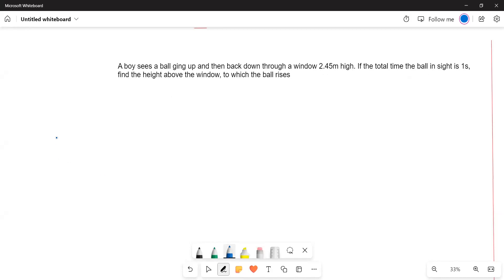Let us see. This is the window. The total height of the window is 2.45 meters. A boy sees a ball is going up. The ball is here and then he sees that the ball is going up and then it goes further up somewhere and then comes down.